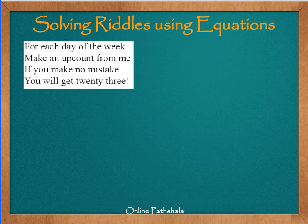Let us continue solving riddles using algebraic equations. Now let us look at what this riddle tells us: 'For each day of the week, make an upcount from me. If you make no mistake, you will get 23.' So that is a tricky riddle.